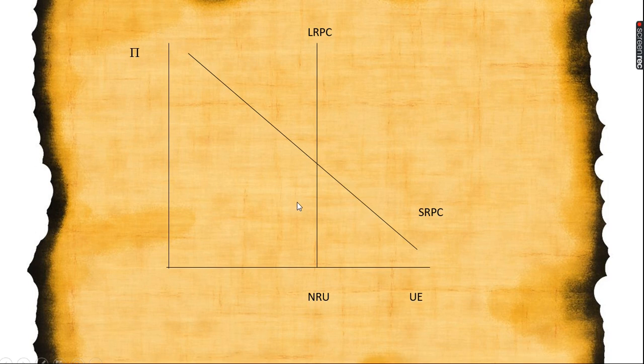To label the Phillips Curve, start by labeling the x-axis UE for unemployment and the y-axis Pi for inflation. The short run Phillips Curve is a downward sloping line and the long run Phillips Curve is vertical. Under the long run Phillips Curve is the natural rate of unemployment, labeled NRU.